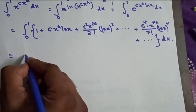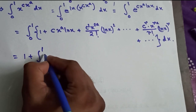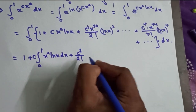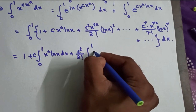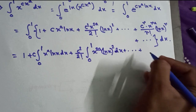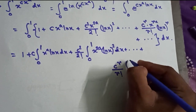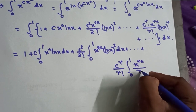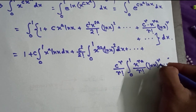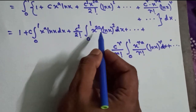The first integration gives 1. Then we have: plus the integral from 0 to 1 of c·x^a·ln x dx, plus c²/(2!) times the integral from 0 to 1 of x^(2a)·(ln x)² dx, and so on, plus the general term c^r / r! times the integral from 0 to 1 of x^(ra)·(ln x)^r dx, and it continues.